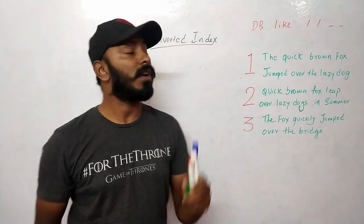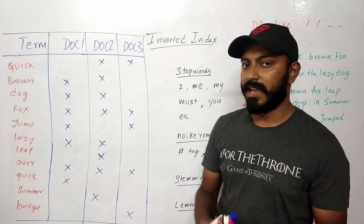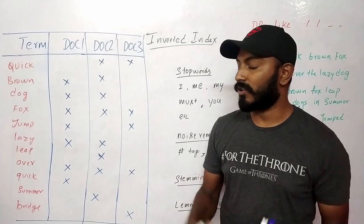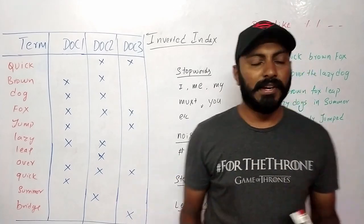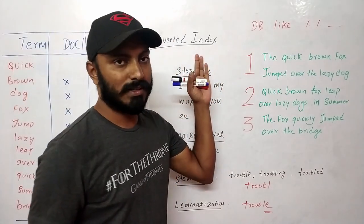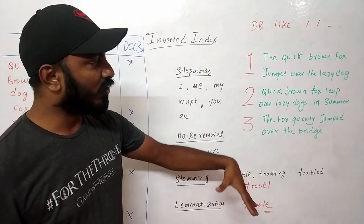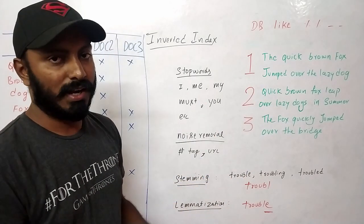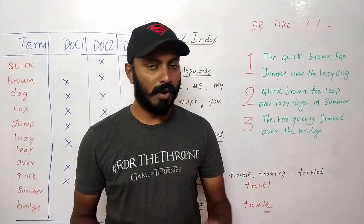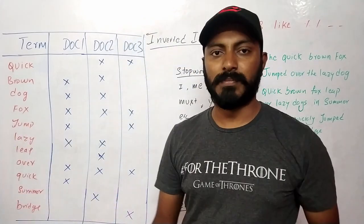So how do we solve this problem? I'm going to introduce a concept called the inverted index. Let's see how this inverted index table — also called a term-document matrix or term-document table — is built. We have three documents, each with a sentence of different text. There are many words repeating and some that are unique.